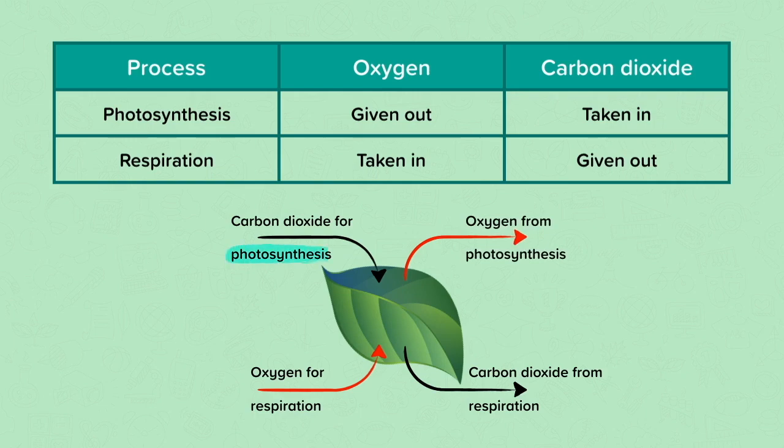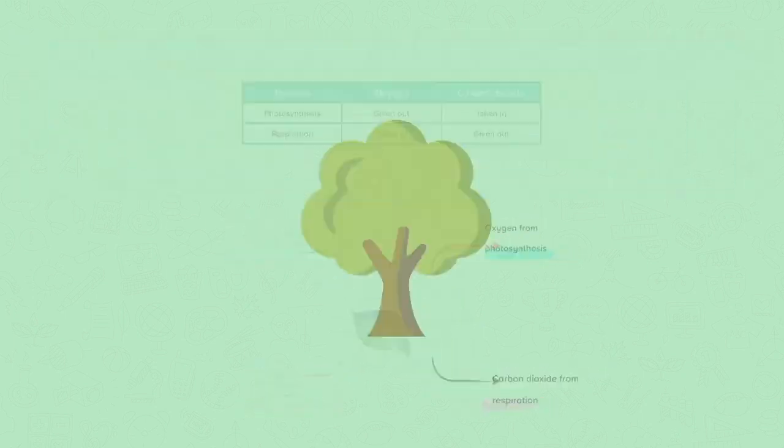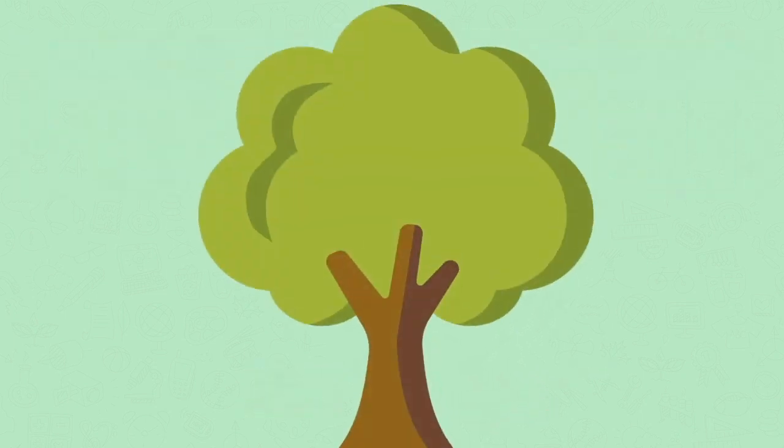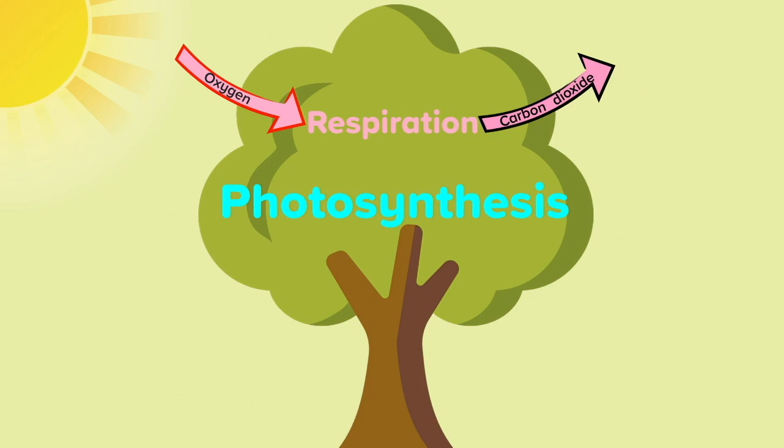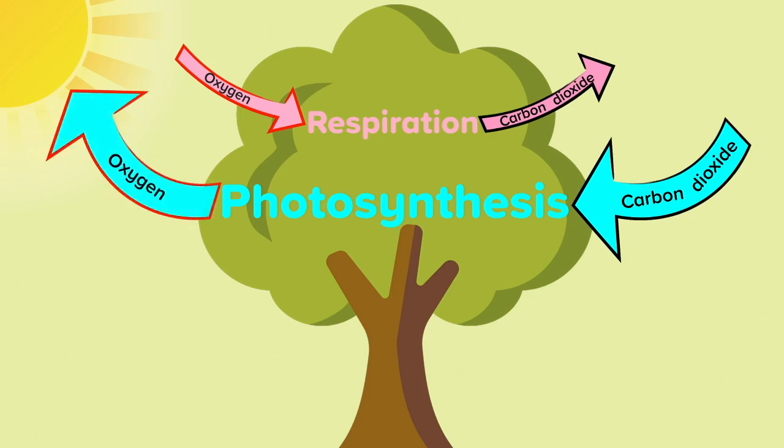Plants respire and photosynthesize, so they are giving out oxygen and carbon dioxide and taking in oxygen and carbon dioxide. The overall effect depends on the time of day. Here is a plant. All living things respire to release energy, so this tree is respiring all the time. During the day, the plant is also photosynthesizing. When the sun is bright, photosynthesis is happening much more quickly than respiration. So overall, plants take in carbon dioxide and give out oxygen during the day.